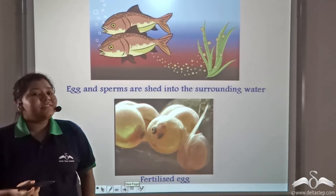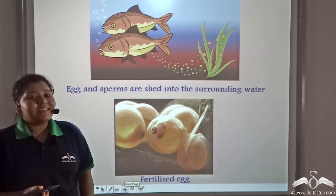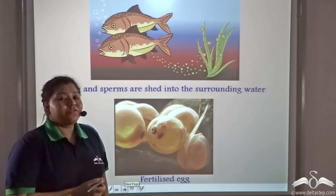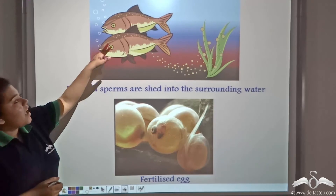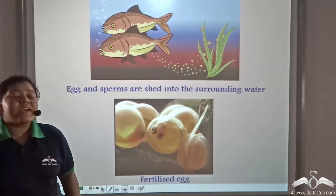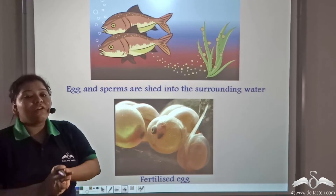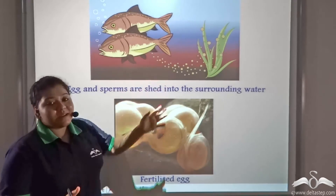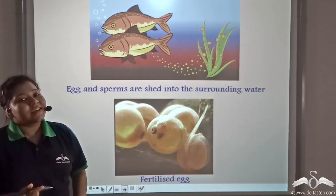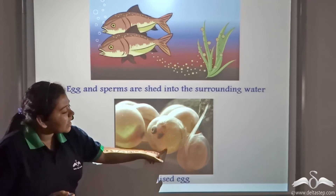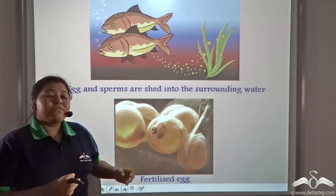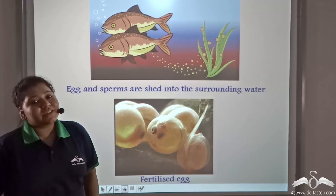External fertilisation is not only seen in frogs but also in fishes. Eggs and sperms are shed into the surrounding water and that is where fertilisation — the union of male and female gametes — takes place, and a new fish fry is formed. This is a real-life image of a fertilised egg, which will burst open to release the fish fry.